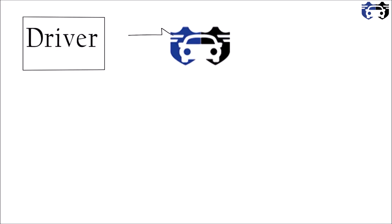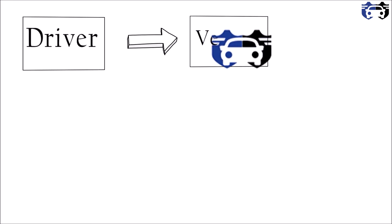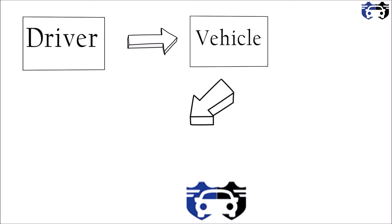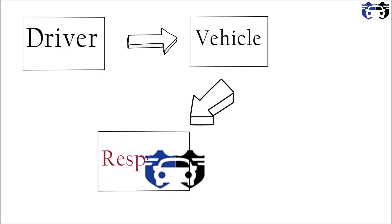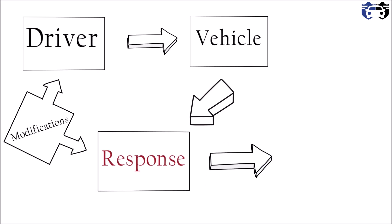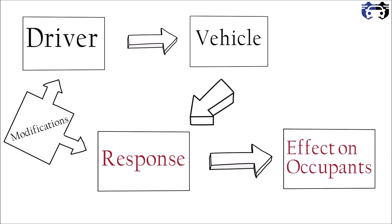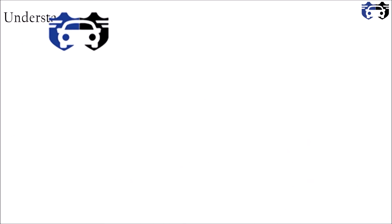Now let's see the flowchart of vehicle dynamics — the driver and vehicle interaction. You, the driver, are interacting with your vehicle, giving some input and getting some output or responses. According to the response you get, you identify errors and do modifications. The person sitting with you will also be affected — for example, if you press too hard, they will feel the jerk. So this is the effect on the occupants.